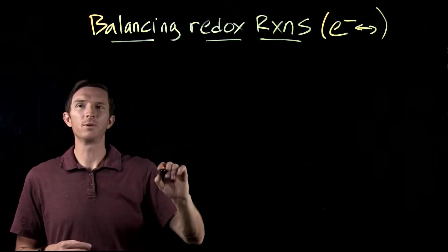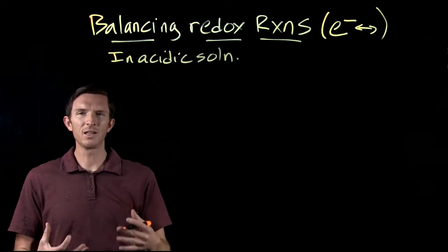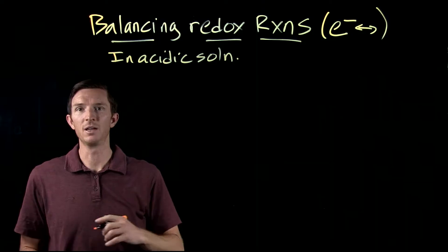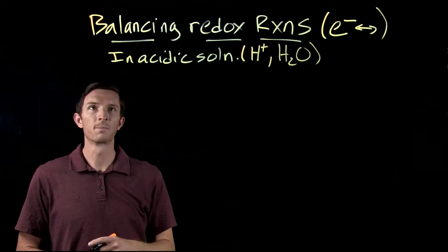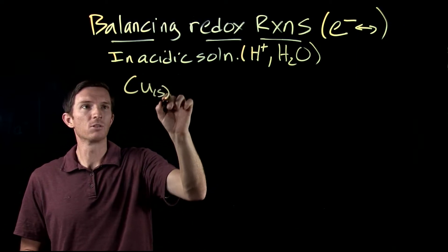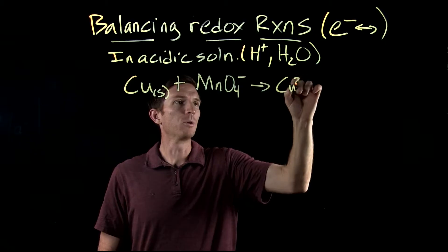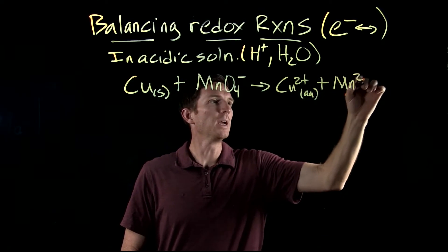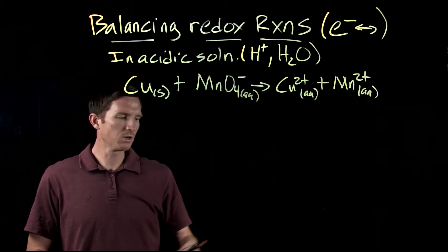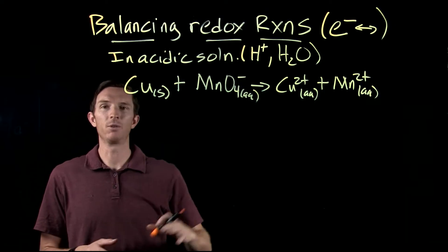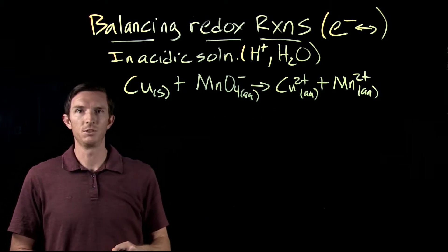We are going to balance a redox reaction first in an acidic solution. In an acidic solution, what's present in excess are H⁺ ions, and we're going to have water since it's dissolved in aqueous solution. We're going to look at the reaction where solid copper reacts with the permanganate ion to yield copper two plus and manganese two plus. This is our skeleton reaction — what's reacting with what, but not necessarily balanced.